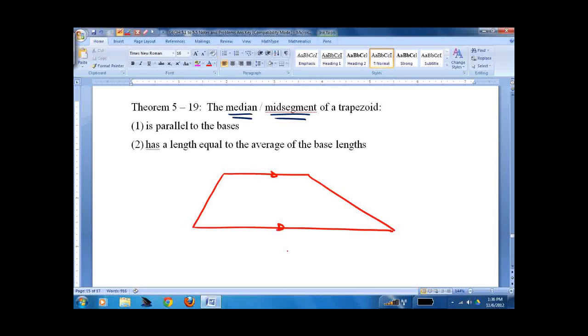Trapezoid, because it's got parallel bases. We draw a couple of midpoints. So they're parallel. And it's the average. So 6 and 10, this would be 8.